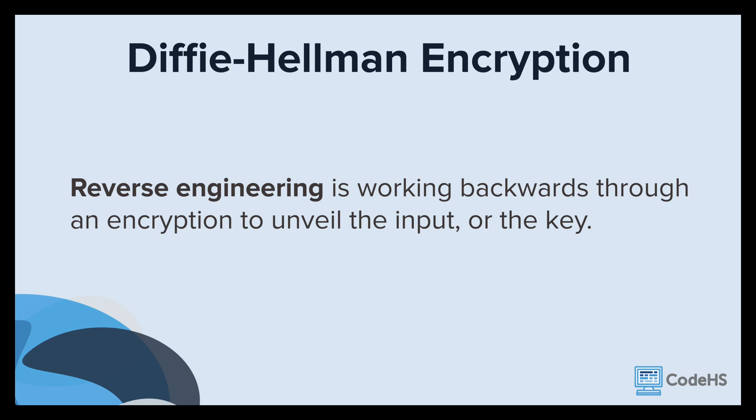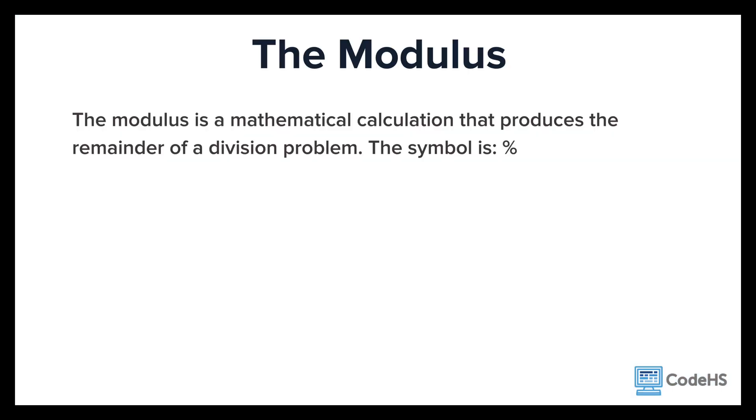The trick of the Diffie-Hellman key exchange is that it's relatively easy to encrypt but very difficult to attempt to work backwards through those encryption steps. Working backwards through the steps is called reverse engineering. Using an output, cyber attackers can try to reverse engineer an encryption with the hopes of unveiling the input or the key. The math used in the encryption is what makes the reverse engineering virtually impossible. Math functions are used that are easy going forward but hard to work through backwards.